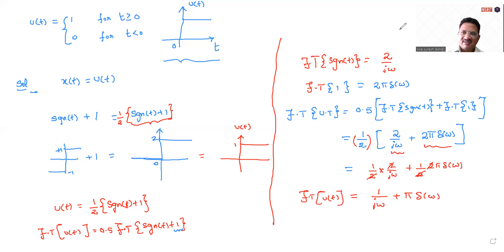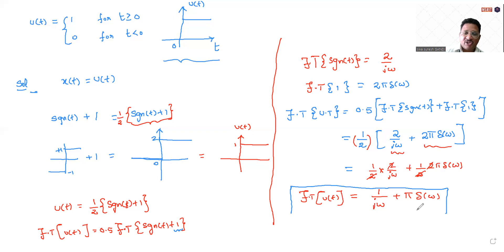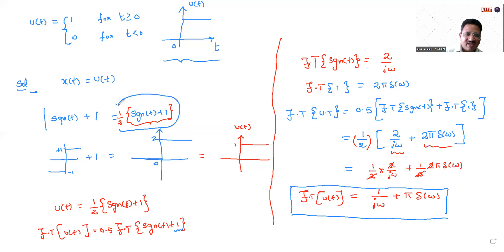This result is very important, students. You cannot find the Fourier transform of the unit step function directly. You need to make use of this indirect method, using the signum function relationship, in order to find the Fourier transform of the unit step function.